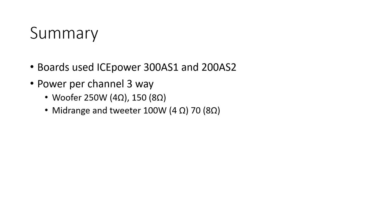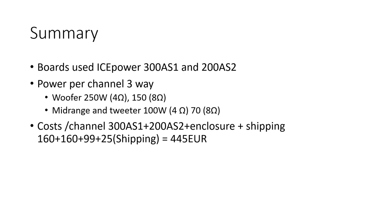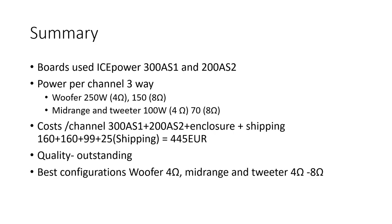And summarizing. Boards used IcePower 300 AS1 and 200 AS2. Power per channel 3-way, woofer 250 watts at 4 ohms, and about 150 for 8 ohms. Mid-range and tweeter 100 watts for 4 ohms and about 70 watts for 8 ohms. Cost per channel 300 AS1 plus 200 AS2 plus enclosure plus shipping, it's about 445 euros. Quality, quality outstanding. Best configuration for you, woofer 4 ohms load and mid-range and tweeter 4 to 8 ohms. There is no difference. Good luck with your projects.